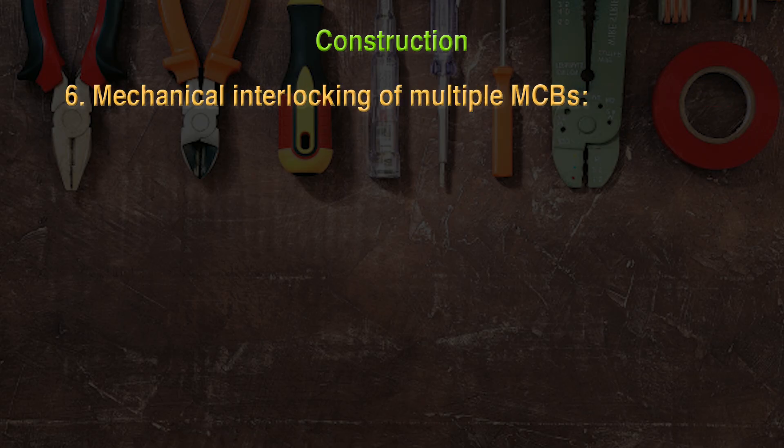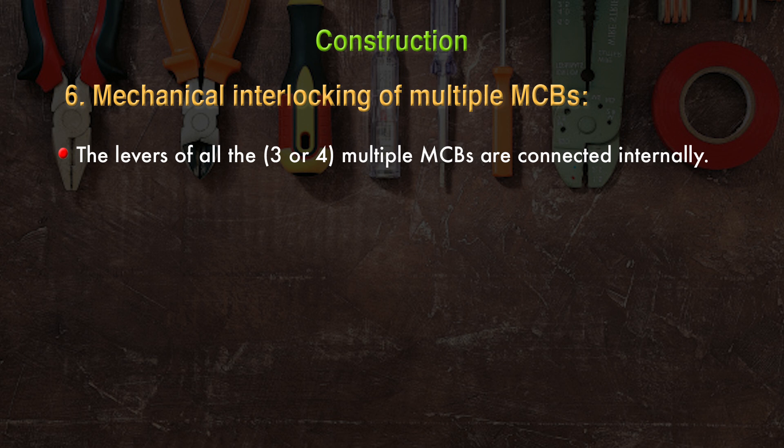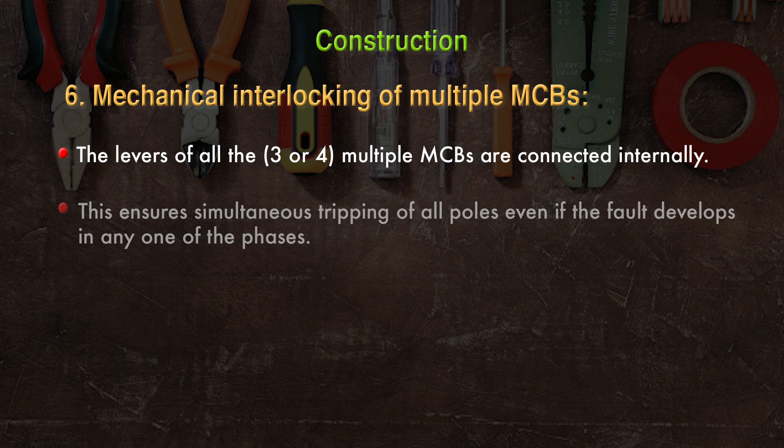For mechanical interlocking of multiple MCBs, the levers of all multiple MCBs are connected internally. This ensures simultaneous tripping of all poles even if the fault develops in any one of the phases.